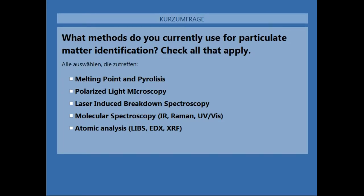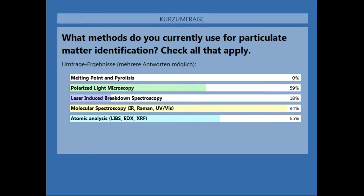The first poll question is: what methods do you currently use for particulate matter identification? Check all that apply: melting point and pyrolysis, polarized light microscopy, light-induced breakdown spectroscopy, molecular spectroscopy, and atomic analysis. It looks like molecular spectroscopy is the most popular answer. It seems we have real experts here, so I can skip explanations about what spectroscopy is.